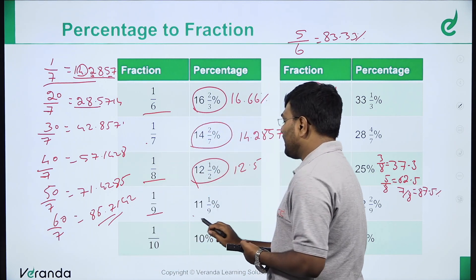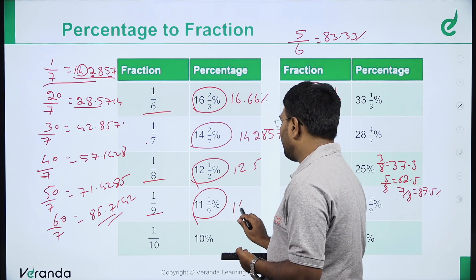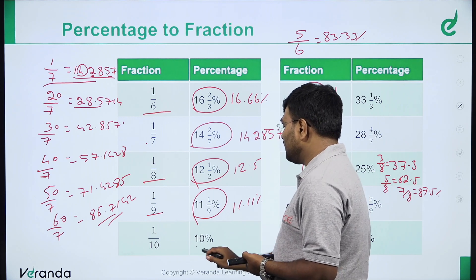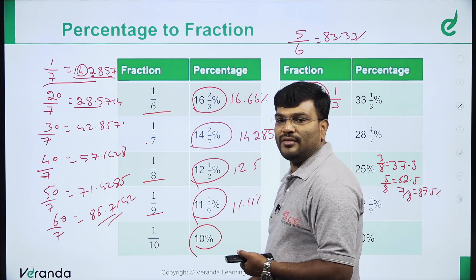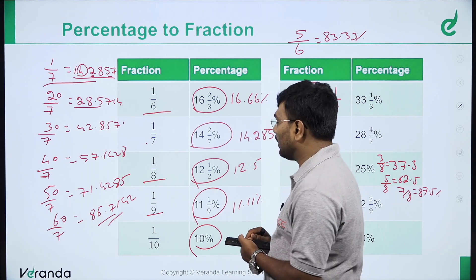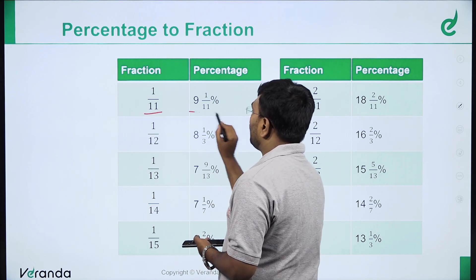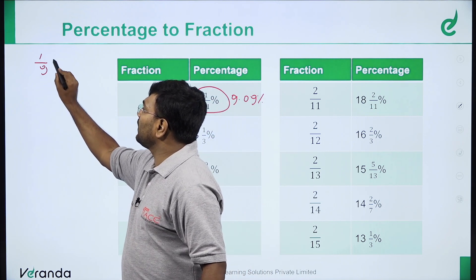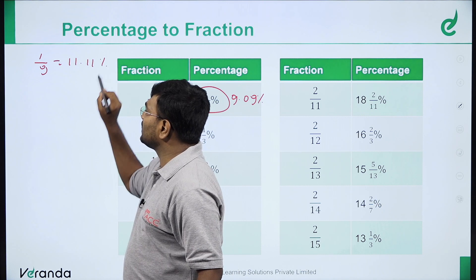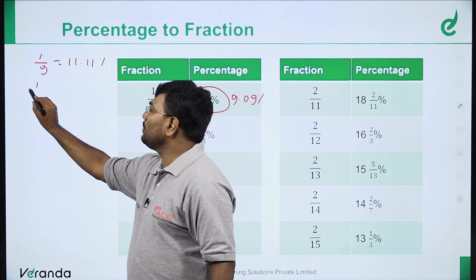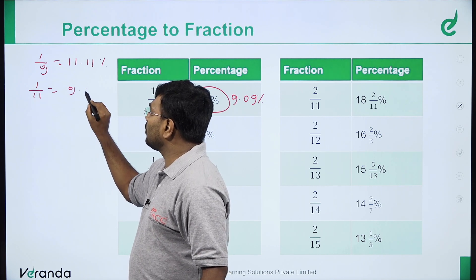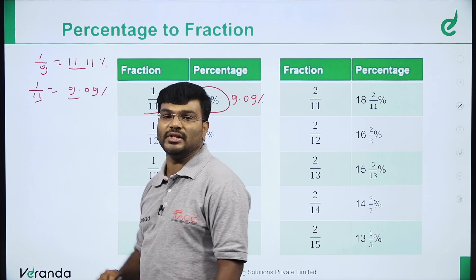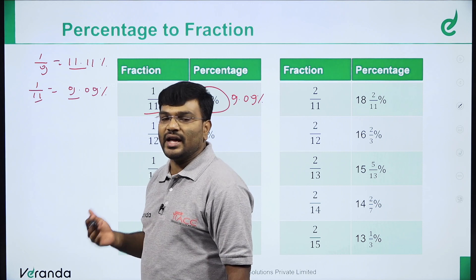1 by 9 is 11.11%. 1 by 10 is 10%. Notice the relationship between 1 by 9 and 1 by 11: 1 by 9 is 11.11% and 1 by 11 is 9.09% — they are opposites. 9 and 11 are related: 11.11 corresponds to 9, and 9.09 corresponds to 11.